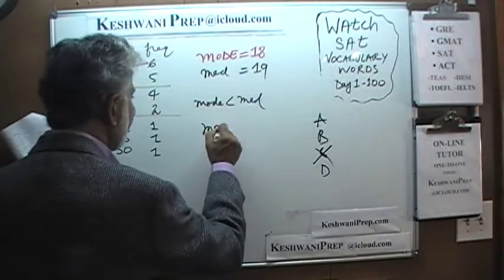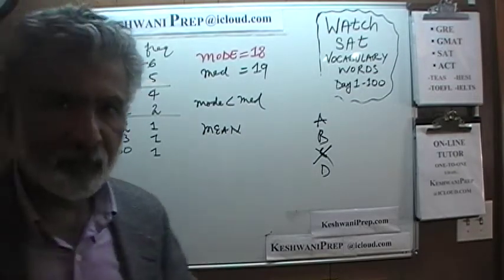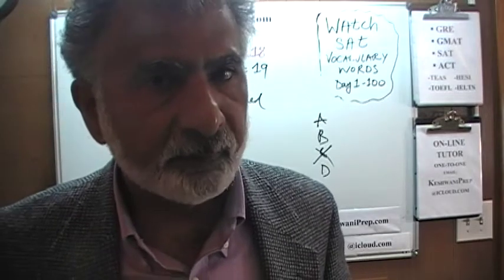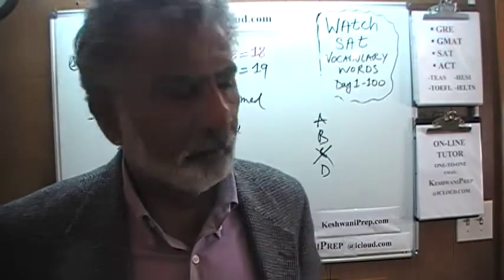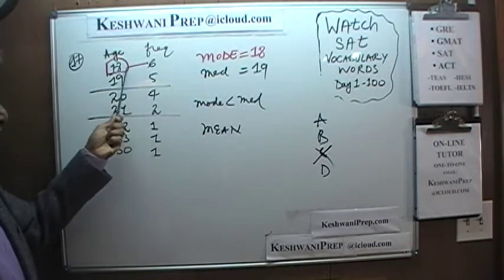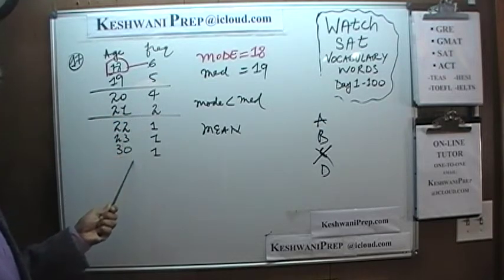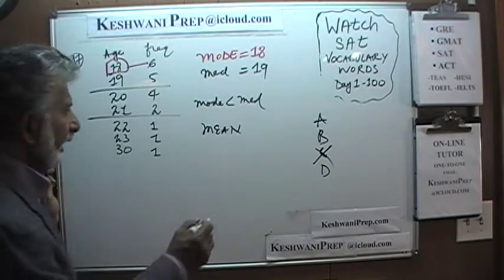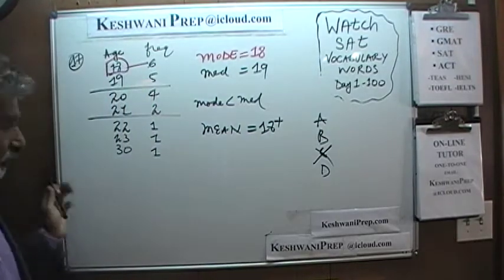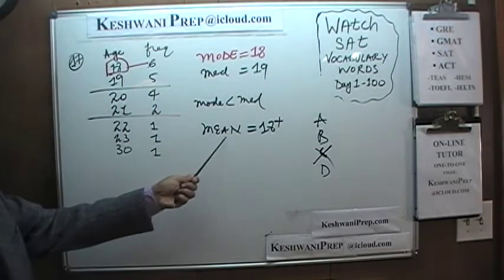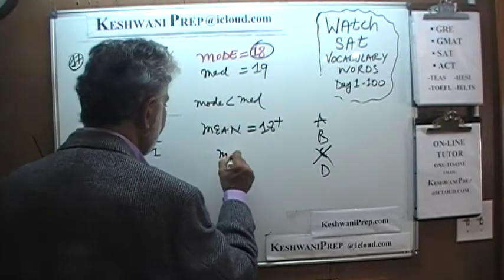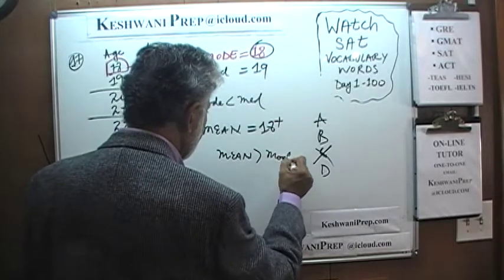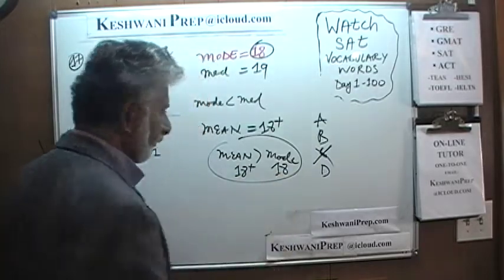Let's move on to the mean. The key thing to understand is that the mean of a group of numbers can never be lower than the lowest number — whether you have 20 or 20 million observations. Since 18 is the youngest, the remaining 14 people are all older than 18 and are pulling the average up. So the mean has to be more than 18. Mode is 18, which means mean is more than mode. We can cross out answer choice D, which says the opposite.